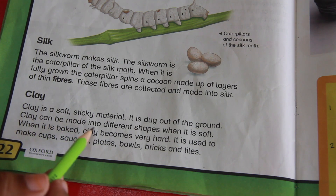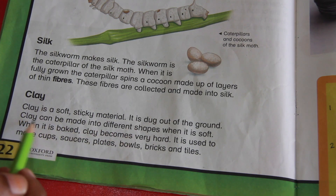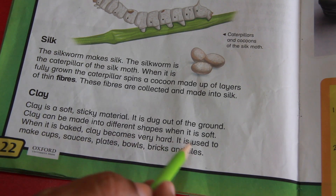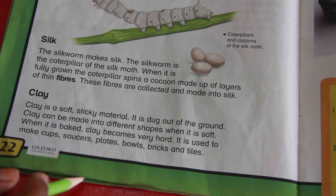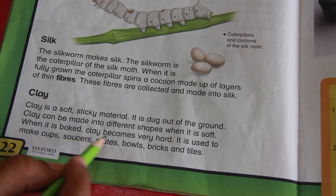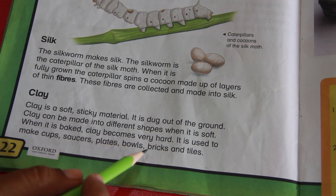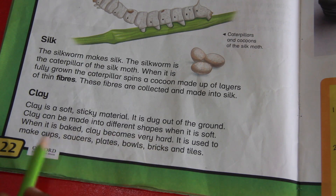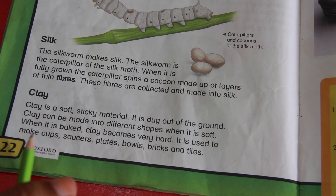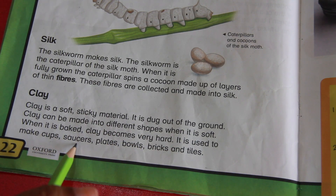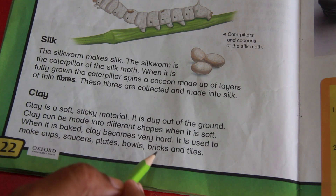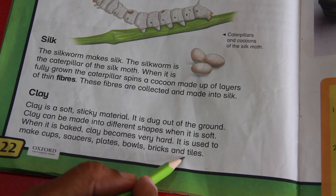Clay can be made into different shapes. When the clay is fired, it becomes very hard. It is used to make saucers, plates, bowls, bricks, and tiles.